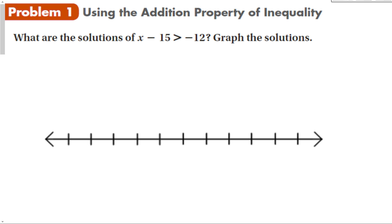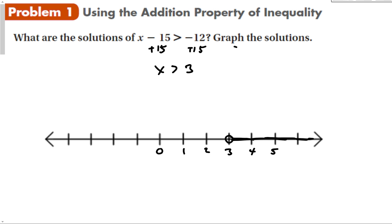My steps to solve are the same as with an equality — isolate the variable using inverse operations. For the inequality x minus 15 is greater than negative 12, I add 15 to both sides to keep the equation balanced, giving x is greater than 3. To graph this solution, I make a number line. At 3, I put an open circle because it says greater than, not greater than or equal to. Then I shade to the right because x is greater than 3 — the arrow of the inequality points to the right.